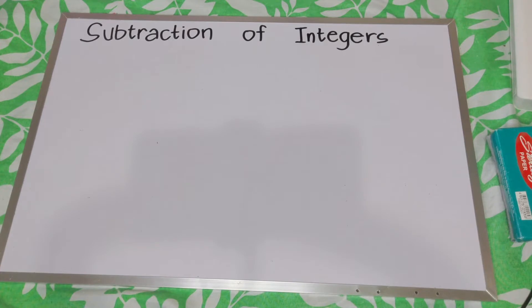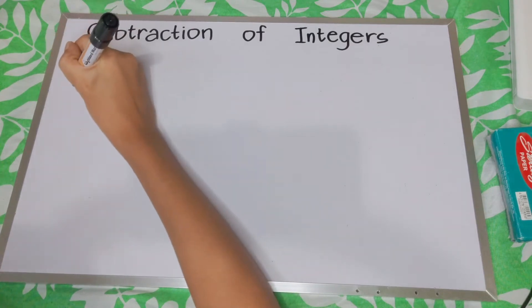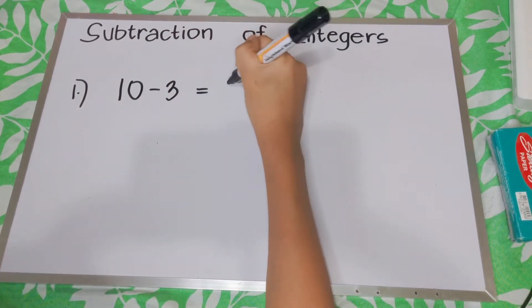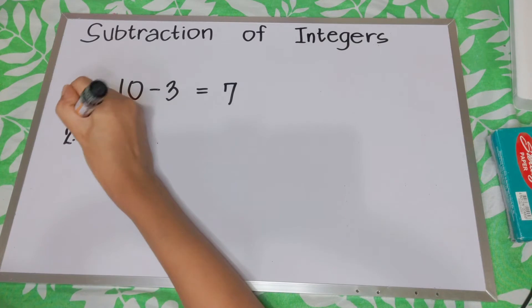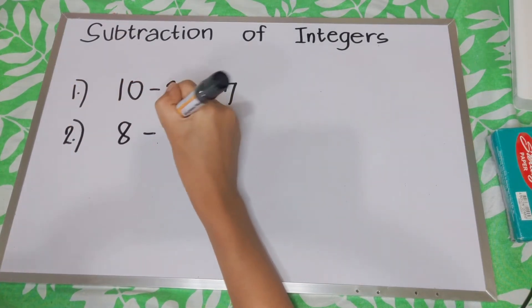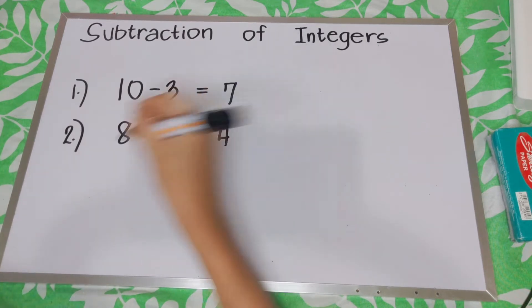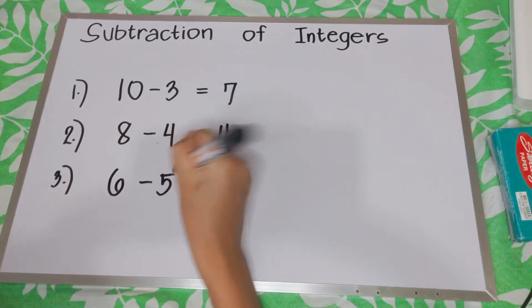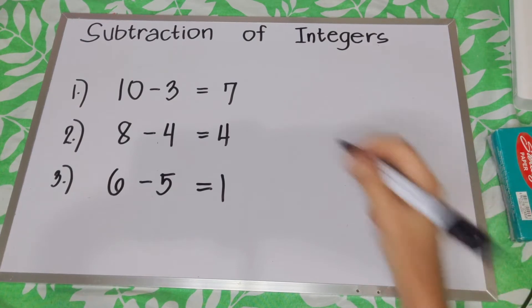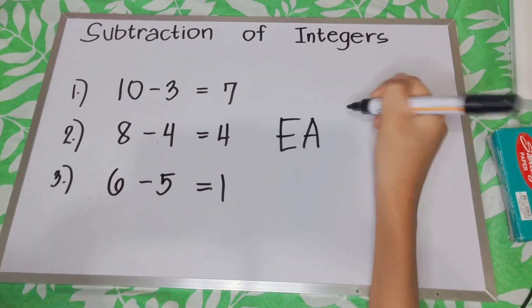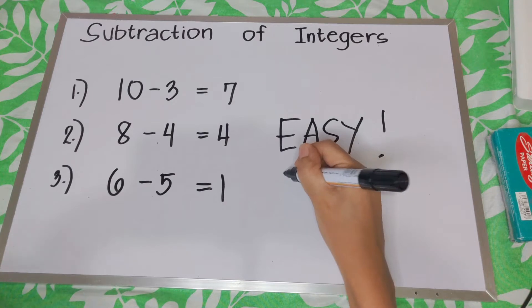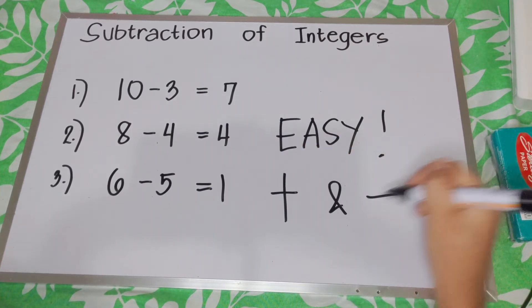Today's lesson is about subtraction of integers. But before anything else, let's try this: 10 minus 3 is equal to 7. 8 minus 4 is equal to 4. 6 minus 5 is equal to 1. It's very easy, right? Now, what if there are positive and negative numbers?